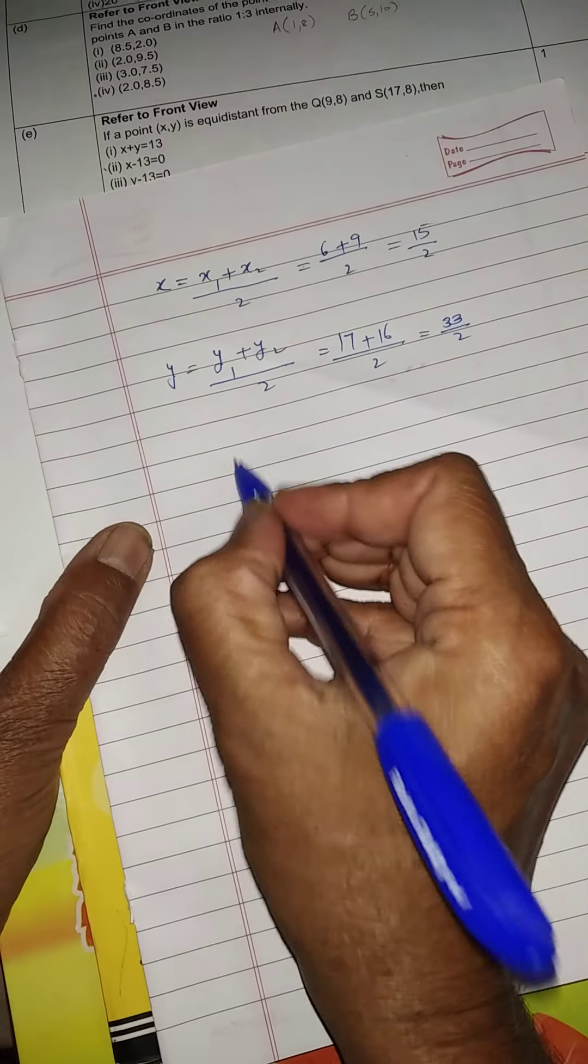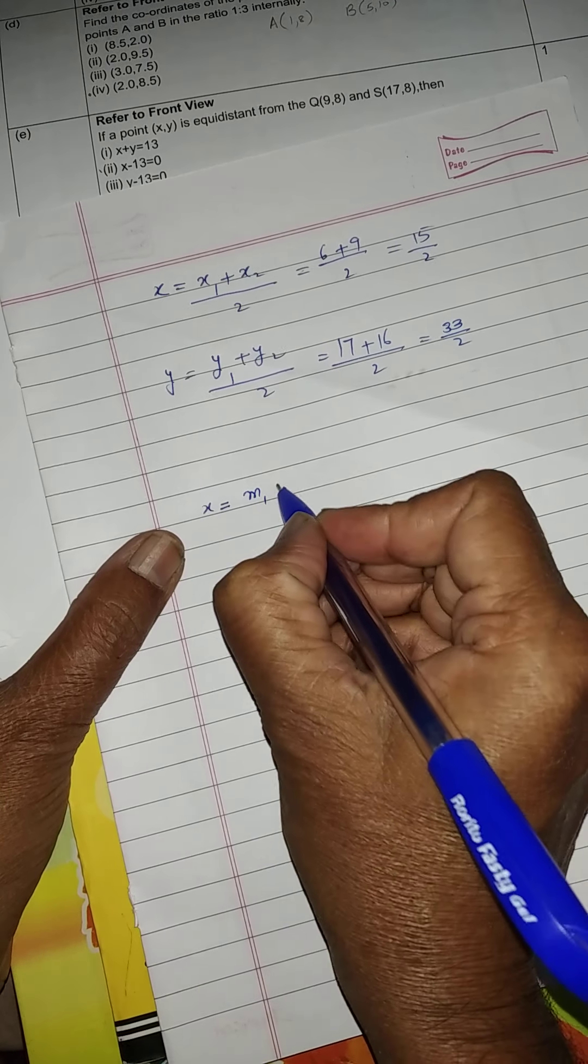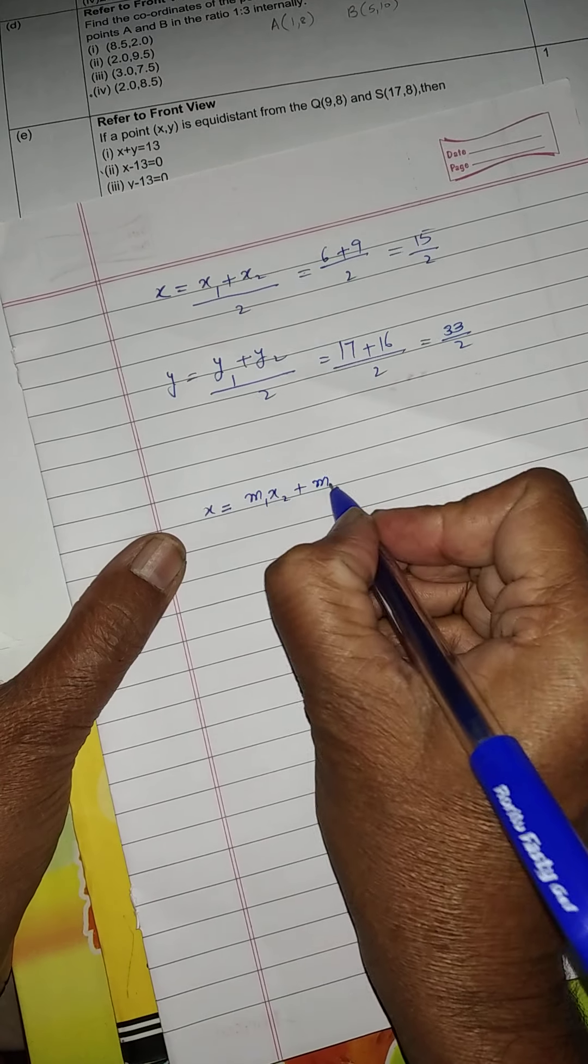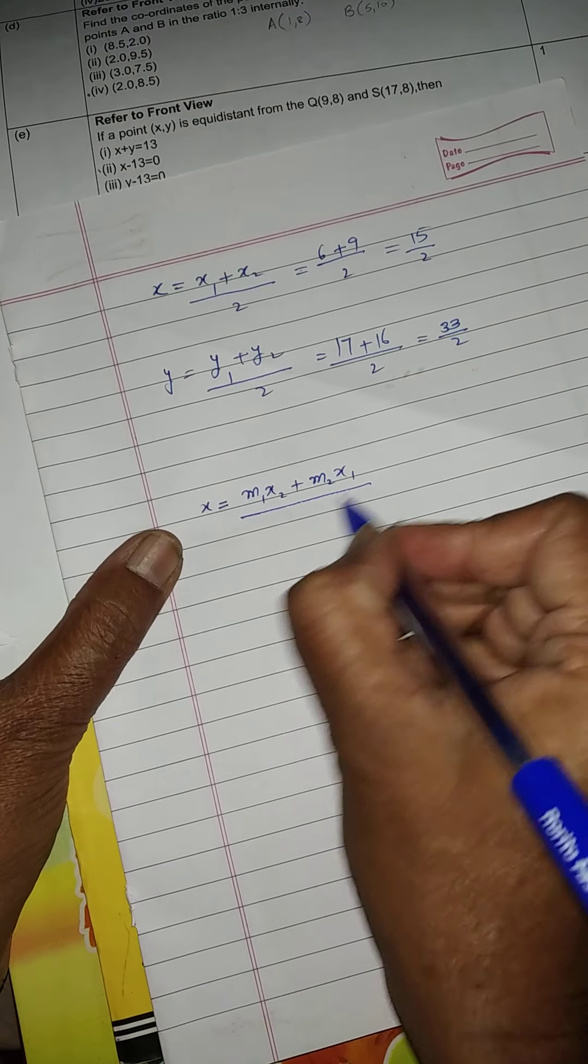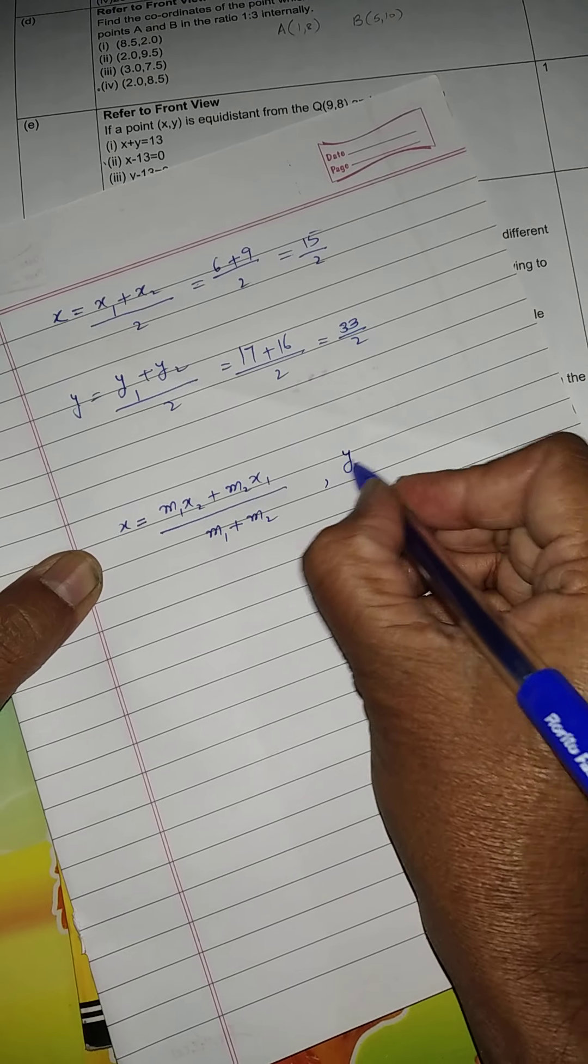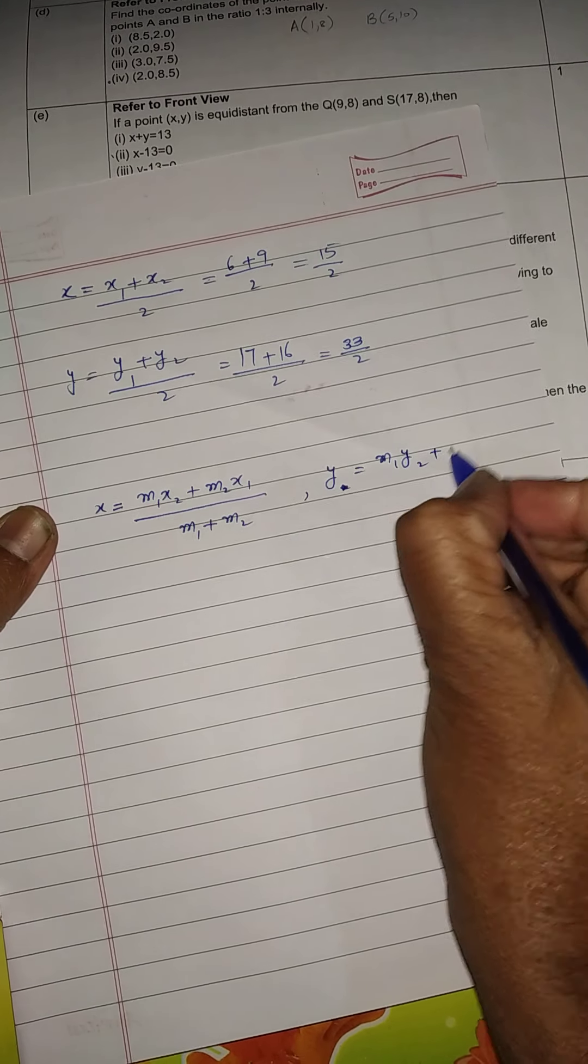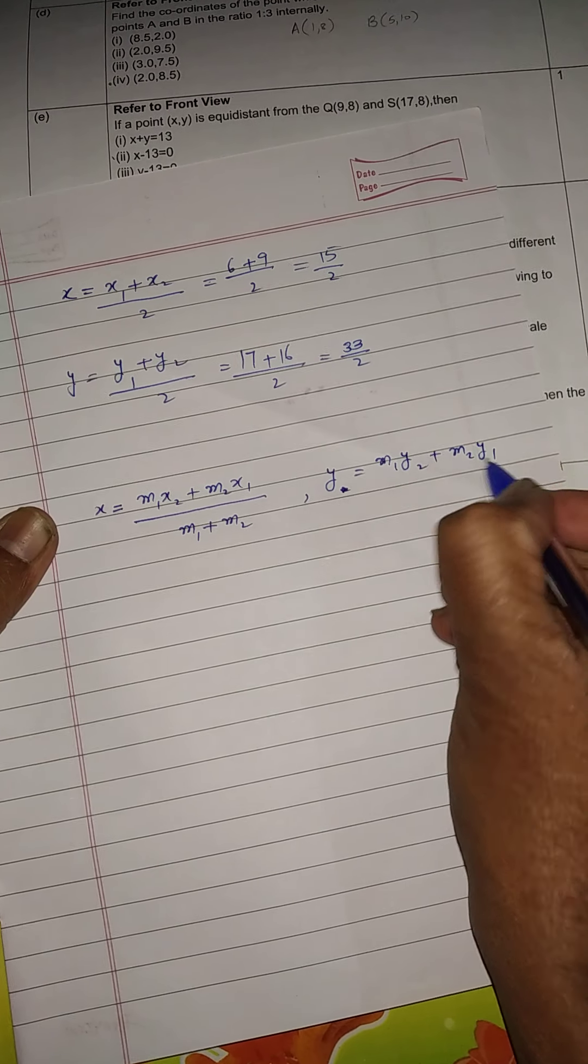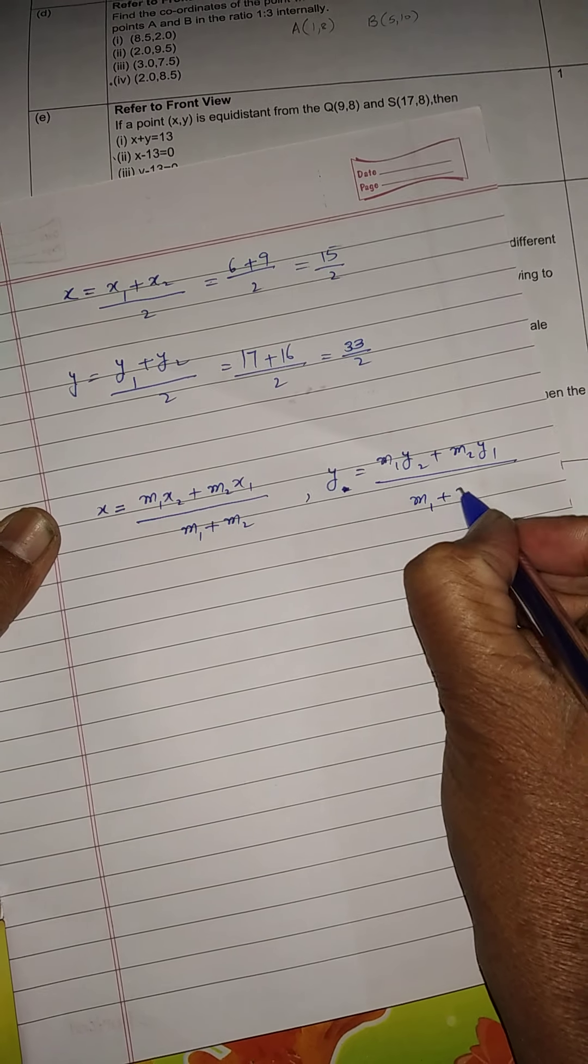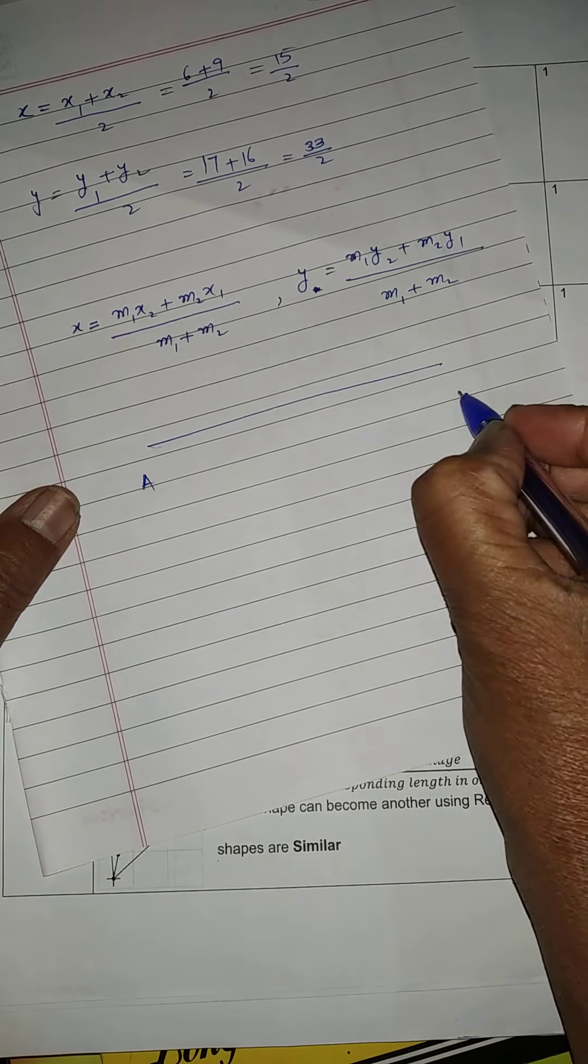What is section formula? It says that x is equal to m1 x2 plus m2 x1 whole upon m1 plus m2. Similarly, y's coordinate will be equal to m1 y2 plus m2 y1 upon m1 plus m2. Let us write this information which they have given A and B. This is A and that is B. Coordinates of A they have given 1 and 8. Coordinates of B are 5 and 10.